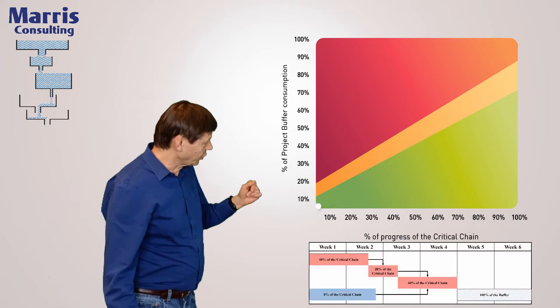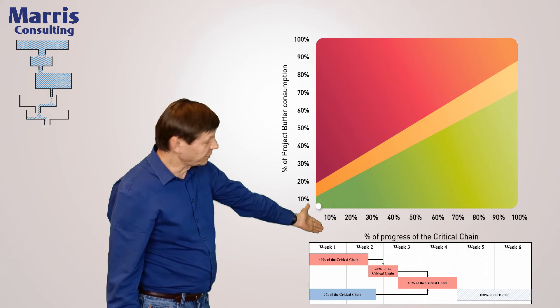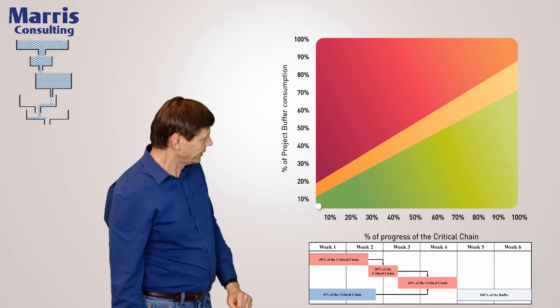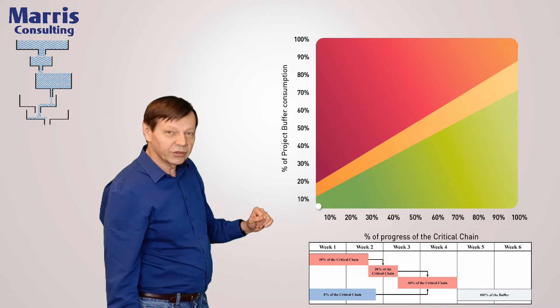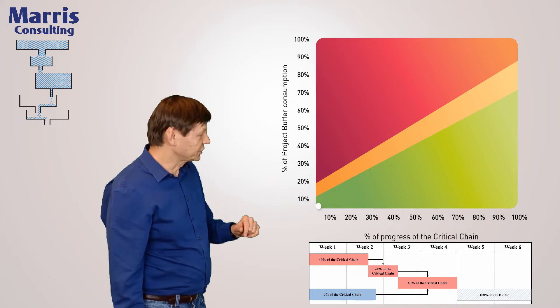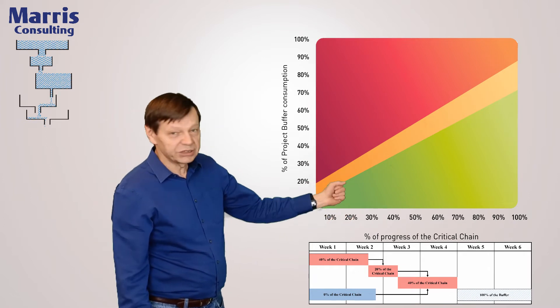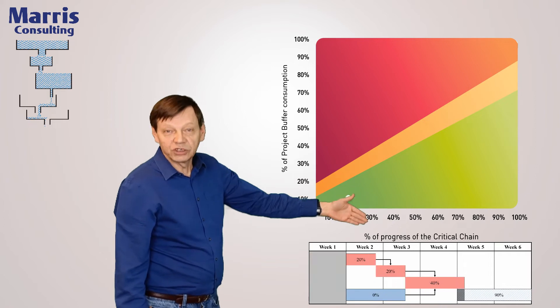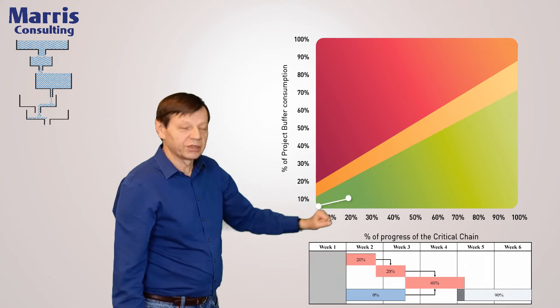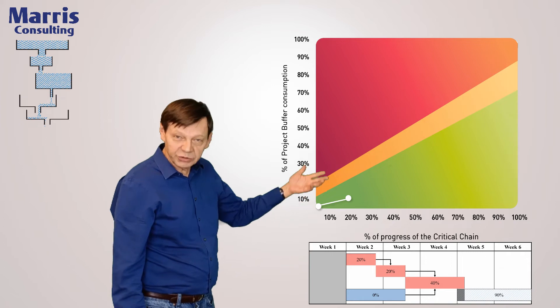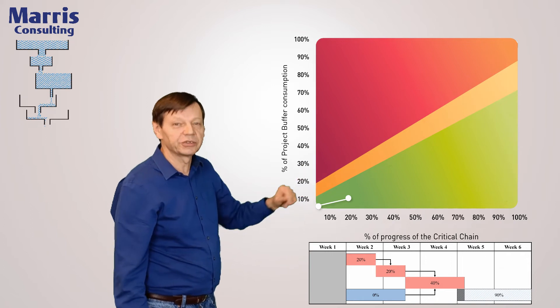So we start off at the beginning with zero percent progress and zero percent consumption of the buffer. At the end of the first week we look at where we are and we see that we've progressed but we've consumed a little bit of the buffer. Not much, but just a little bit. That's perfectly normal, that's what it's there for. We went slightly slower than optimistic.